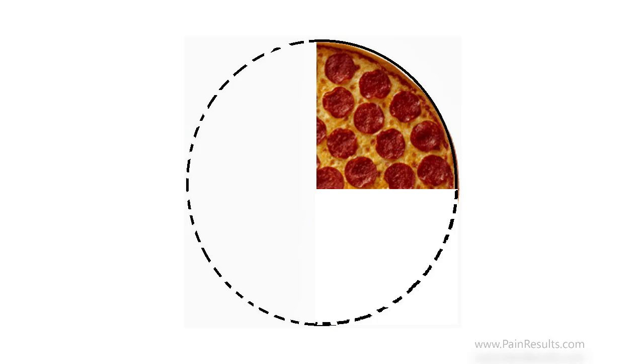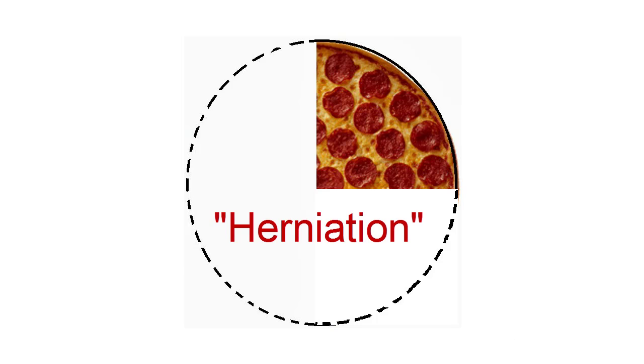The real difference between a disc bulge and a disc herniation is this: less pizza. Let's go back to that half a pizza and take a piece away — now you have less than half. When it's less than half a pizza that's protruding out, that's called a herniation, and a herniation comes from an event. It doesn't have to be some major event, though that's often the cause. Sometimes the disc has gotten weaker and weaker, and then one final straw that broke the camel's back happens and that disc herniates out.